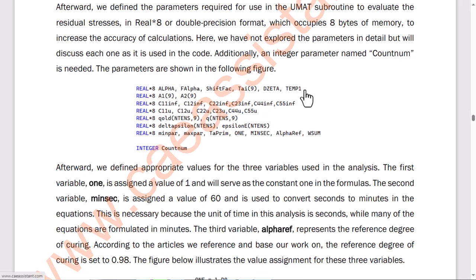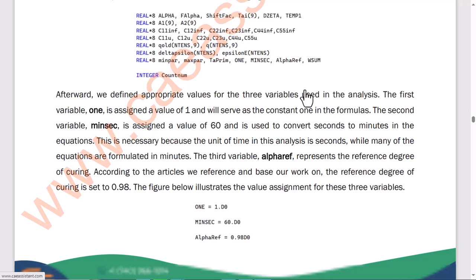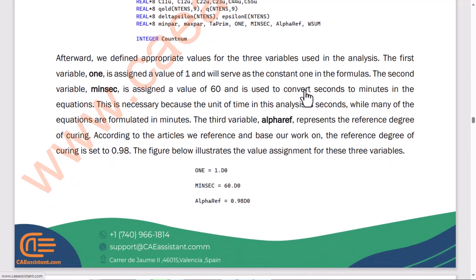We then assigned appropriate values to three variables used in the analysis. The first variable, one, is set to 1 and serves as the constant 1 in the formulas. The second variable, minsec, is set to 60 and is used to convert seconds to minutes in the equations. This is necessary because the unit of time in this analysis is seconds, while many equations are formulated in minutes. The third variable, alpha_ref, represents the reference degree of curing, which according to the referenced articles, is set to 0.98. The figure shows how these values are assigned.